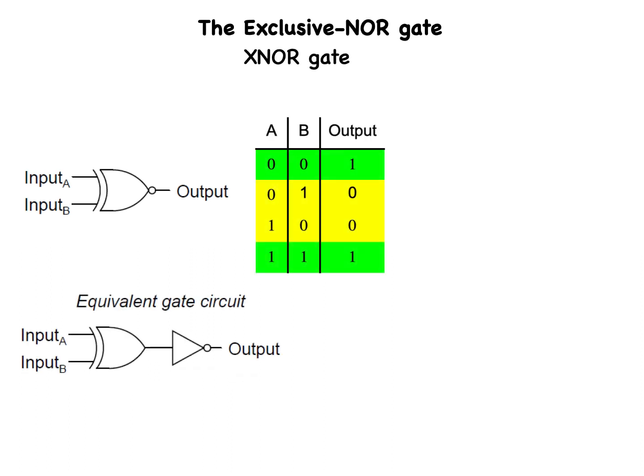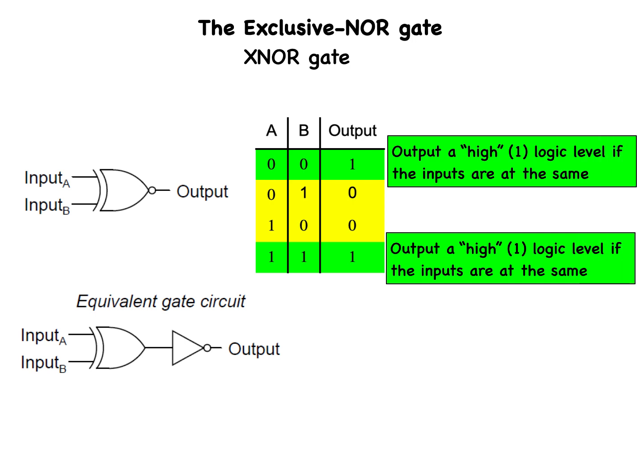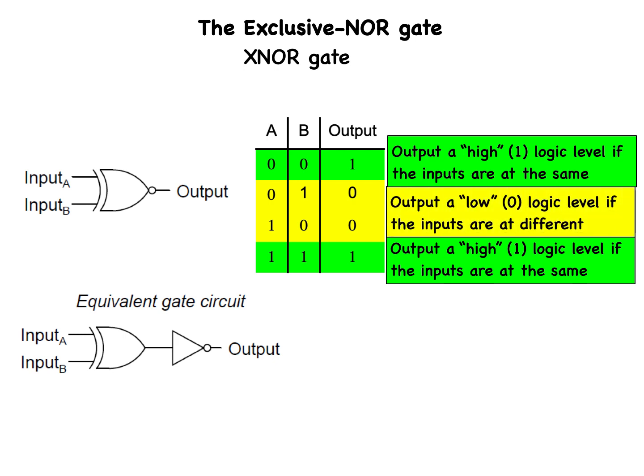Our last gate for analysis is the exclusive NOR gate, otherwise known as the XNOR gate. It is equivalent to an exclusive OR gate with an inverted output. The truth table for this gate is exactly opposite that of the exclusive OR gate. The purpose of an exclusive NOR gate is to output a high (1) logic level whenever both inputs are at the same logic levels — either 0,0 or 1,1 — and to output a low (0) logic level if the inputs are different.